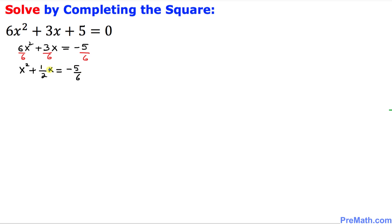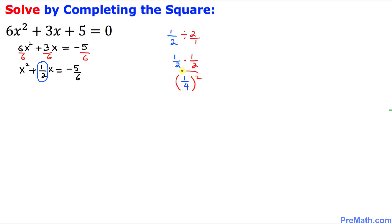Now let's focus on the coefficient of x, the middle number, which is 1/2. We are going to divide this number by 2 — we always divide by 2. Writing 2 as 2 over 1, we divide 1/2 by 2, which is the same as multiplying by 1/2. So 1/2 times 1/2 gives us 1/4, and the last step is we must square it.